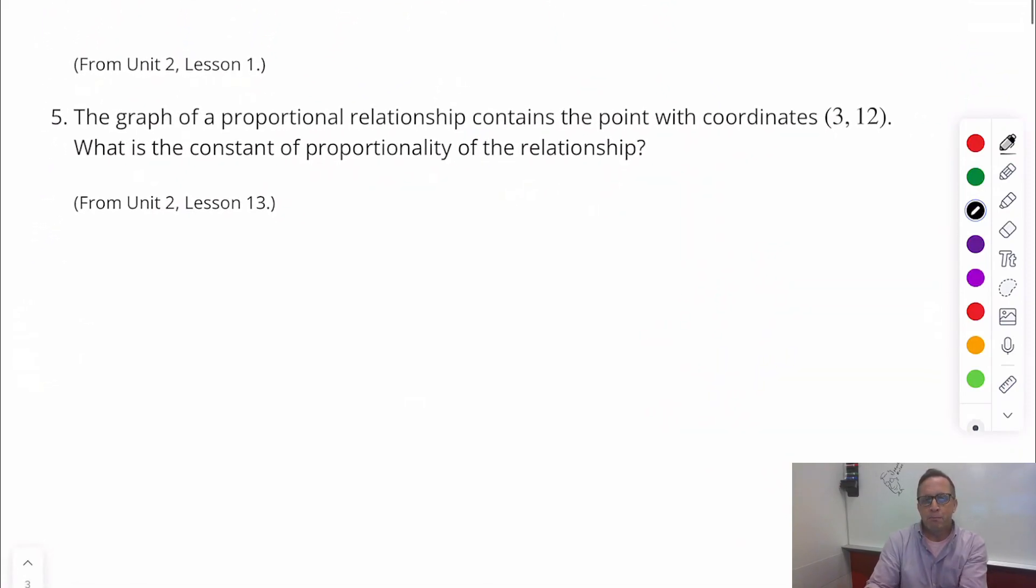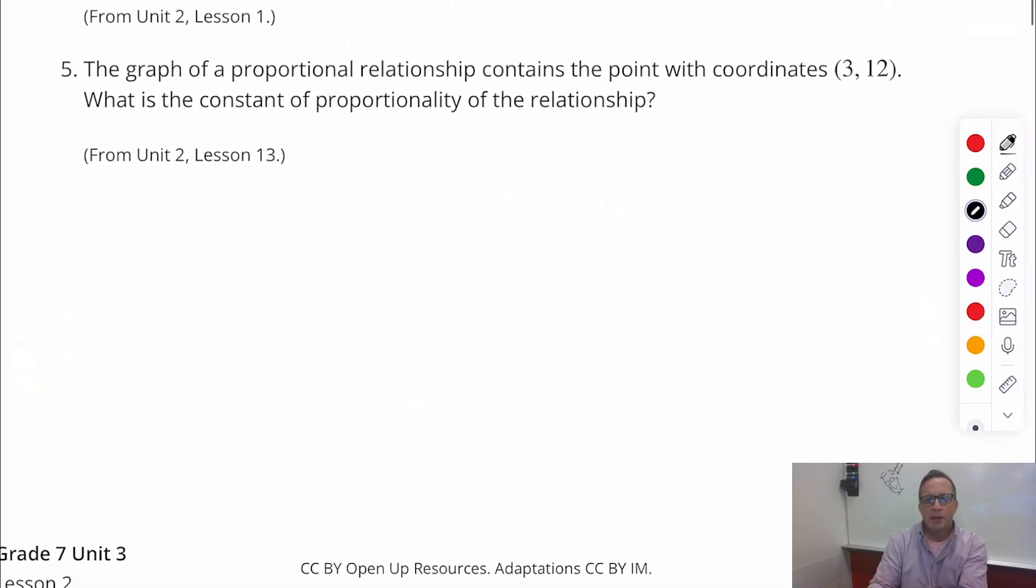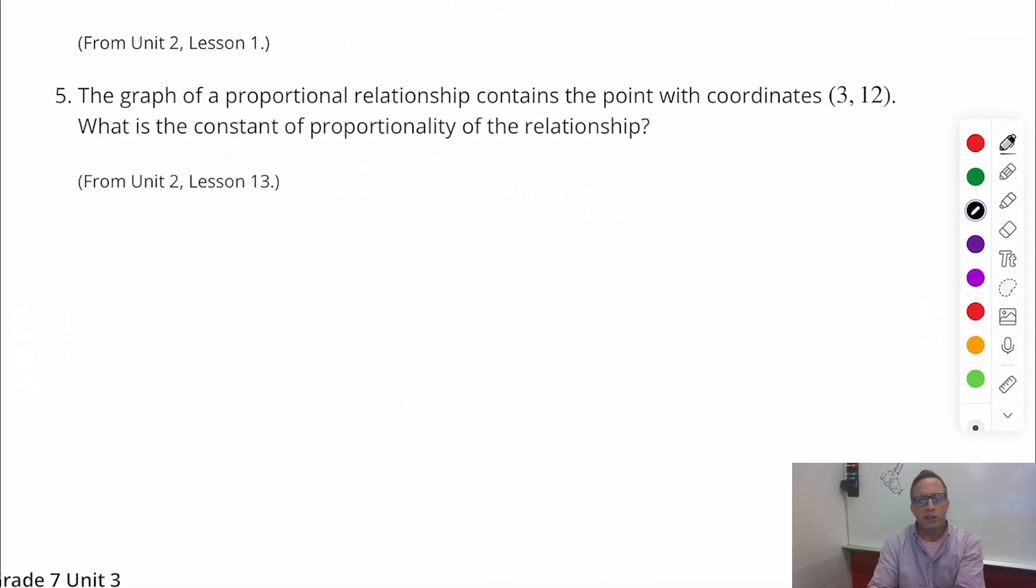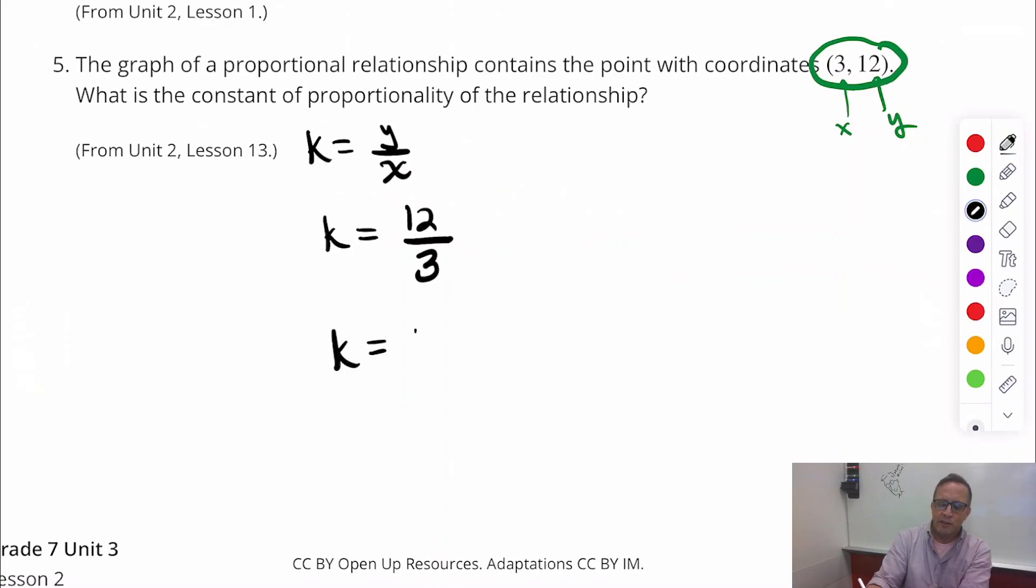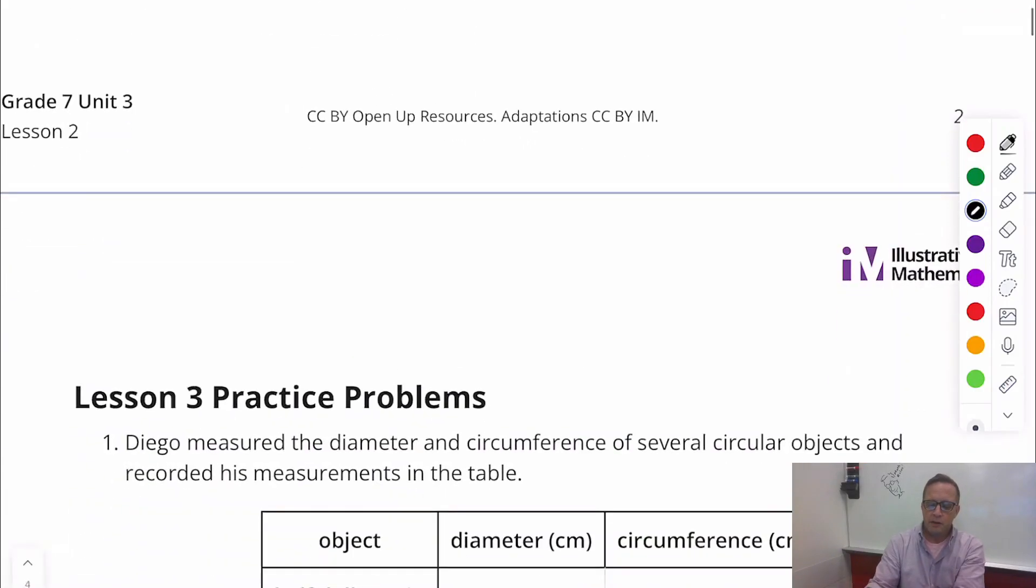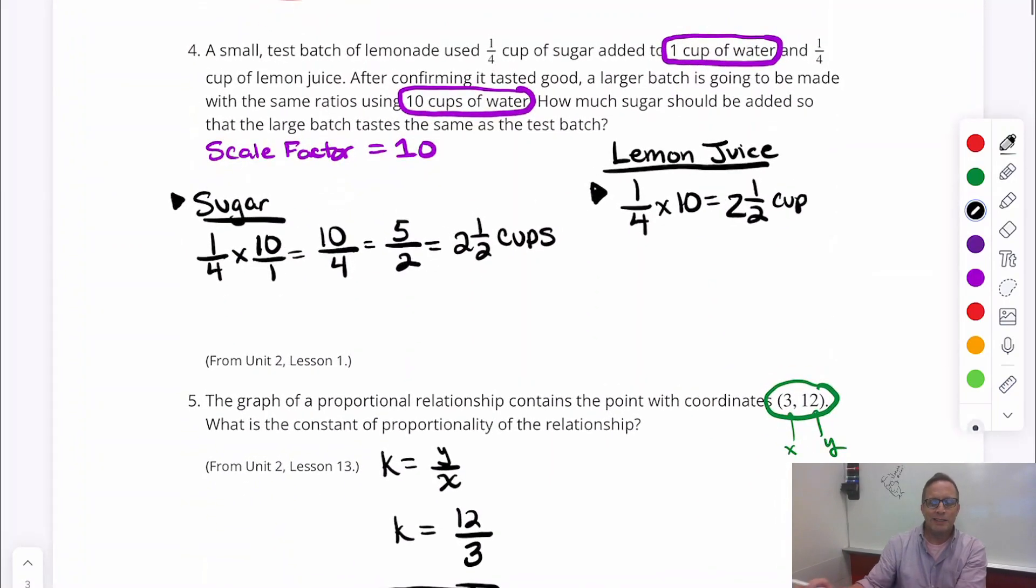Alright. Number five. The graph of a proportional relationship contains the points with coordinates 3, 12. What is the constant of proportionality of the relationship? Alright. So what you're going to need to do is grab some graph paper. No, you don't need to do that at all. We don't need graph paper for this. What we need to do is just look at that right there. We're given coordinates, which means we're given the x and we're given the y. We have the x, we have the y right there. And that's all you need because we know that the constant of proportionality is y divided by x. And so for this one, 12 is our y, 3 is our x, and we're going to divide that. 12 divided by 3 is 4. So there's your constant of proportionality. Alright. That does it for lesson 2 practice problems, everybody.